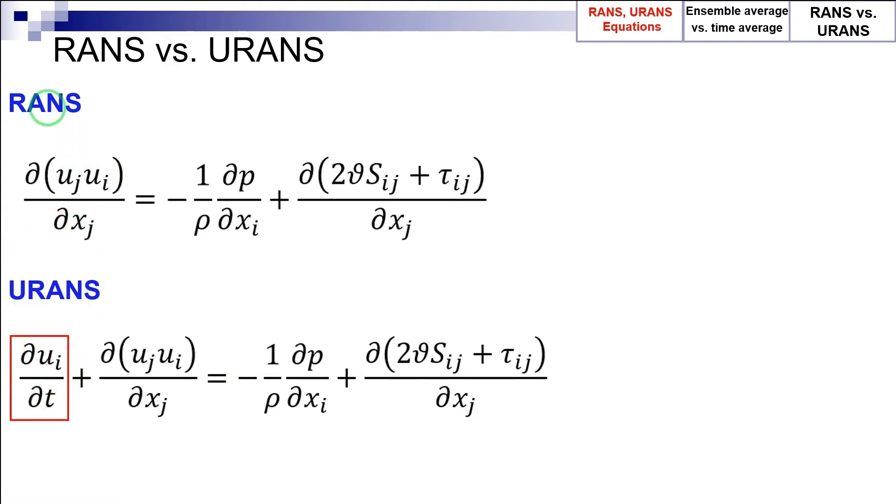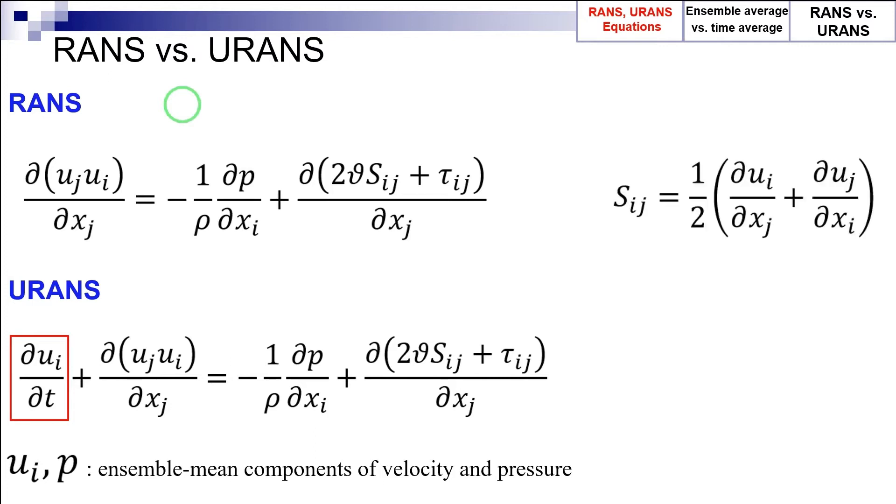In other words, in the URANS equations, the transient term is retained. In both the RANS and URANS equations, U and P are ensemble mean components of velocity and pressure, respectively. Sij is the mean strain rate tensor, which is expressed in terms of the gradient of the mean velocity components, as shown here.